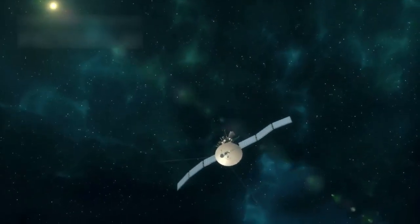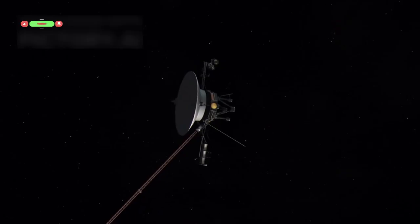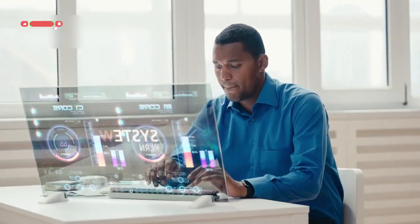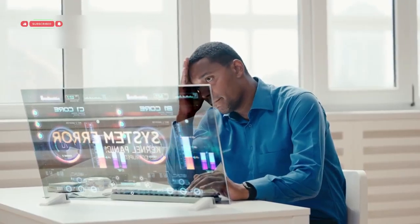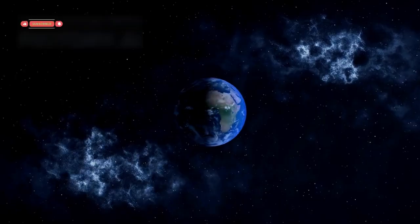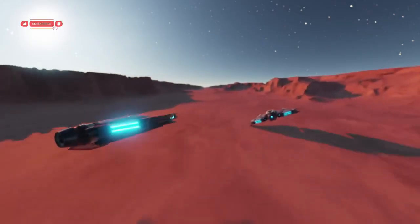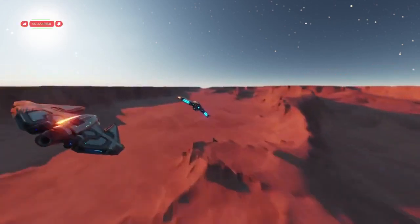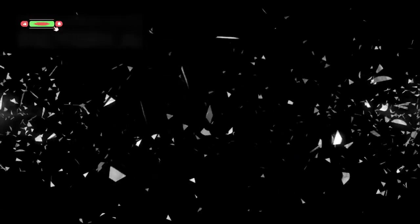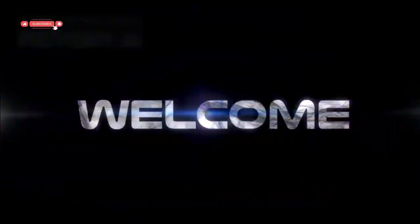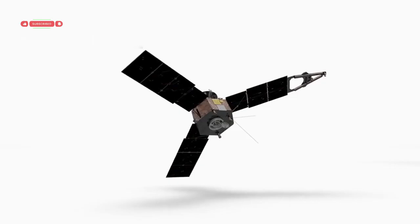Even now, the Voyager probes can surprise us. In 2022, Voyager 1 started sending confusing signals from its attitude control system, which points the antenna at Earth. The data made the spacecraft seem confused about its orientation. This did not stop the probe from working, but it puzzled engineers at NASA's Jet Propulsion Laboratory. Each command to the probe takes about 20 hours to travel, so fixing problems is very slow. The team eventually solved the issue by switching parts of the system off and on to reroute its signals, restoring normal communication. This episode was a reminder that even simple old hardware can produce new puzzles in deep space. It also shows the dedication of the engineers who keep the Voyagers working against the odds.